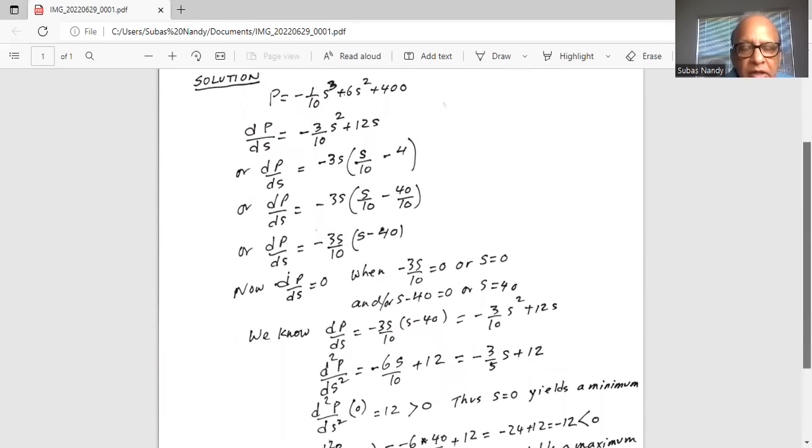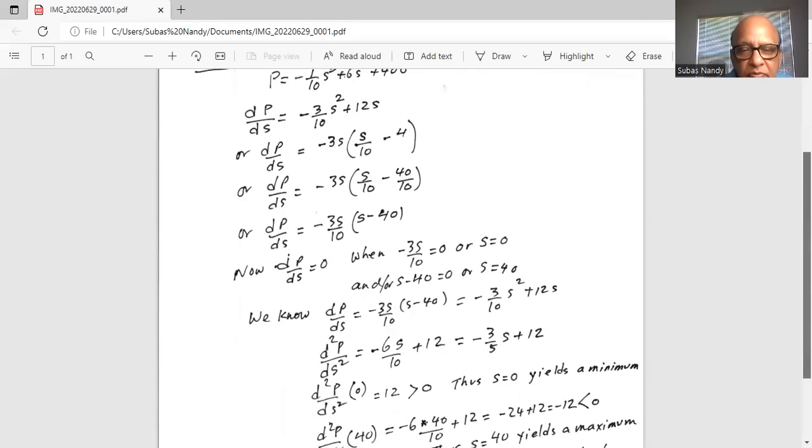We know dp by ds or derivative of p with respect to s is minus 3 over 10 s squared plus 12s. Now we take the second derivative of p with respect to s. We get minus 3 over 10 times 2s plus 12.